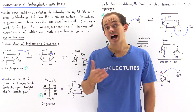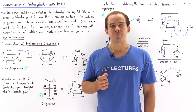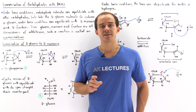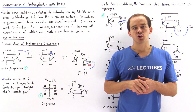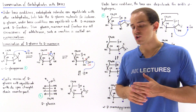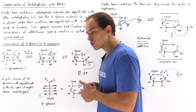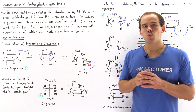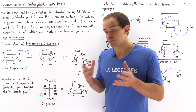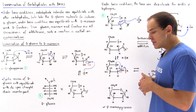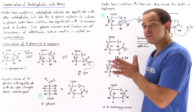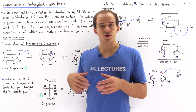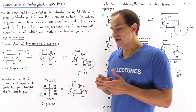Under basic conditions, an isomer of any carbohydrate molecule can transform into a different isomer of that same carbohydrate molecule. This reaction is commonly known as the isomerization of carbohydrates under basic conditions. To explore this reaction further, let's take D-glucose as our example and try to convert it into other isomers via this reaction.